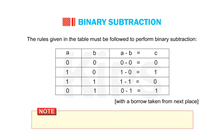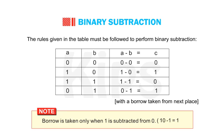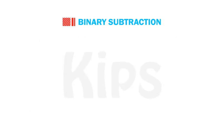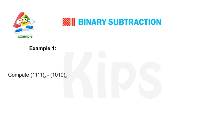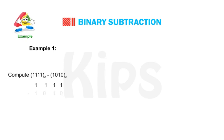Note that a number is borrowed when 1 is subtracted from 0, that is, 0 − 1 = 1 with borrow. Example 1: Subtracting binary 1010 from binary 1111, we get binary 101.